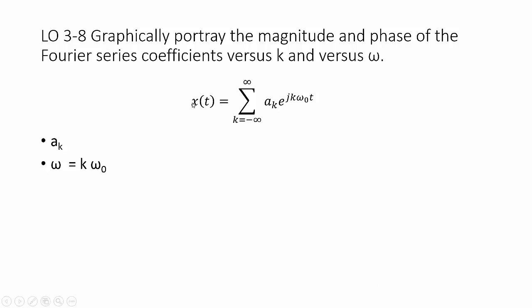In previous learning outcomes, we introduced the synthesis equation for Fourier series, where x of t is the sum of complex exponentials each scaled by an a sub k. Those a sub k's are your Fourier series coefficients. The index k refers to each coefficient, and omega is k times the fundamental frequency omega naught. You learned how to calculate a sub k in learning outcome 3.4 and omega naught in learning outcome 3.3 — go back and review them if you need help here.